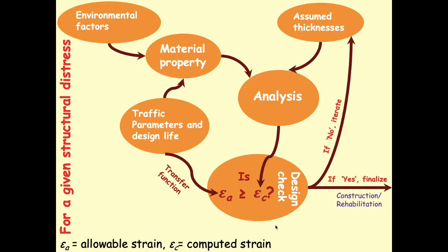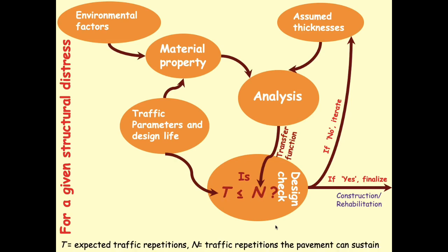Nevertheless, we develop transfer functions where the number of repetitions and strain values are related by empirical correspondence. In our design flowchart, the transfer function is used: we obtain cumulative traffic repetitions and apply the transfer function to obtain allowable strain values. Alternatively, we can apply the transfer function to the analysis output — find the strain, apply the transfer function to get the number of repetitions the pavement can sustain, and check whether that exceeds the expected repetitions.